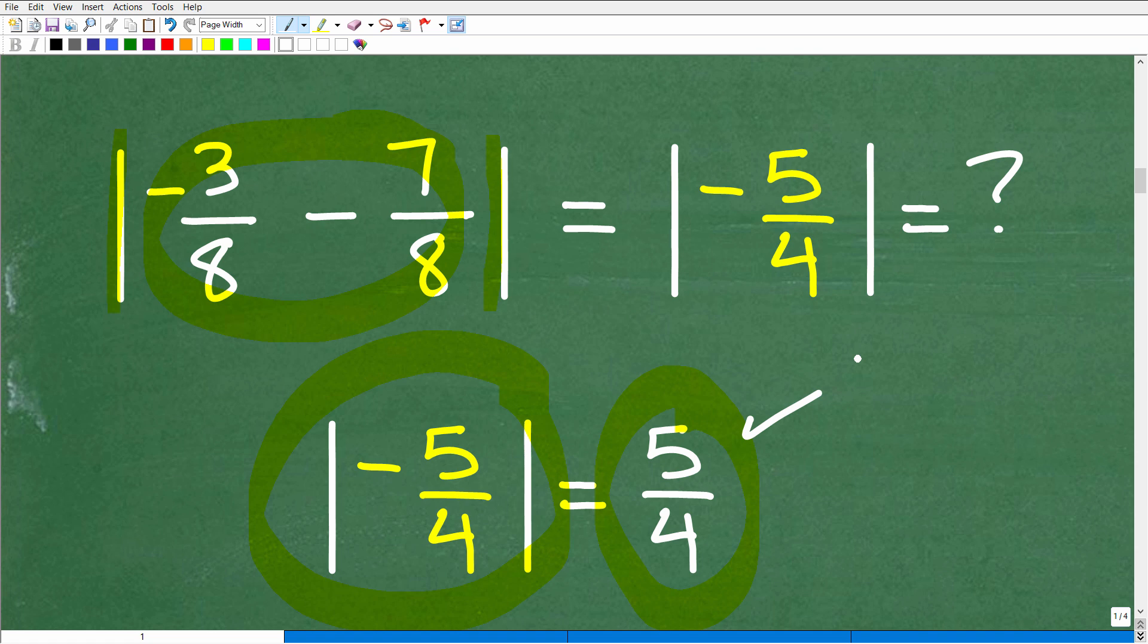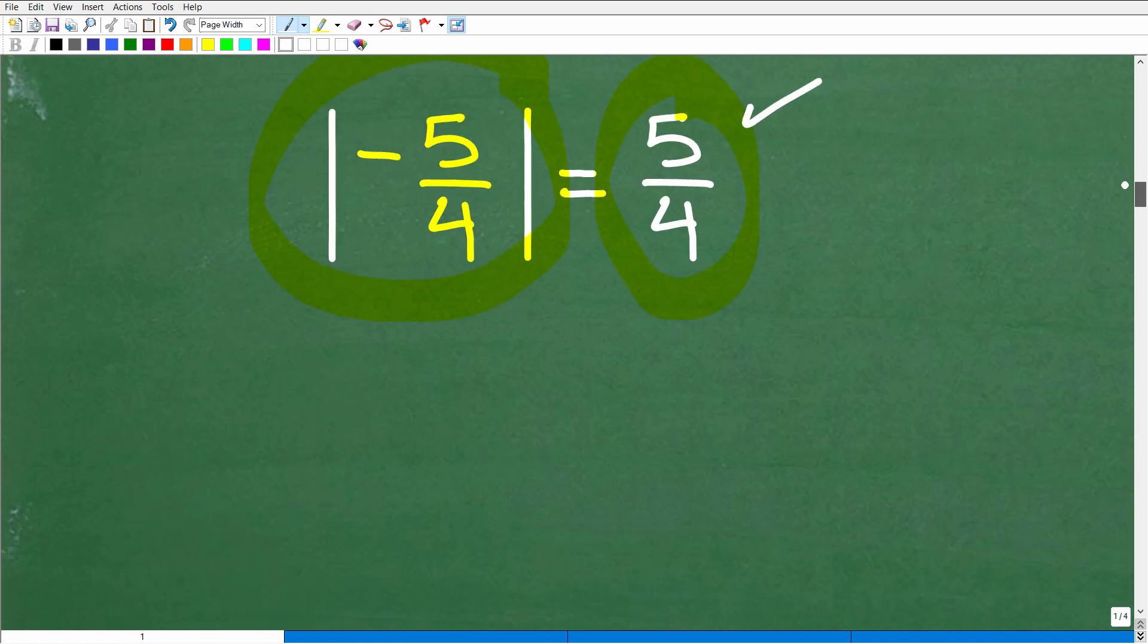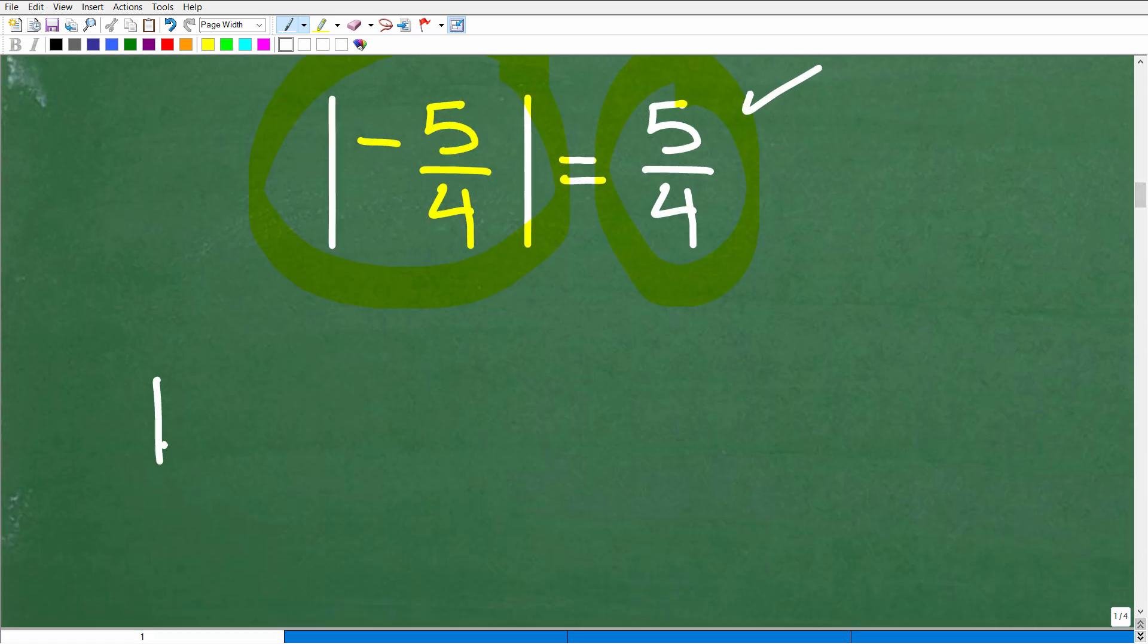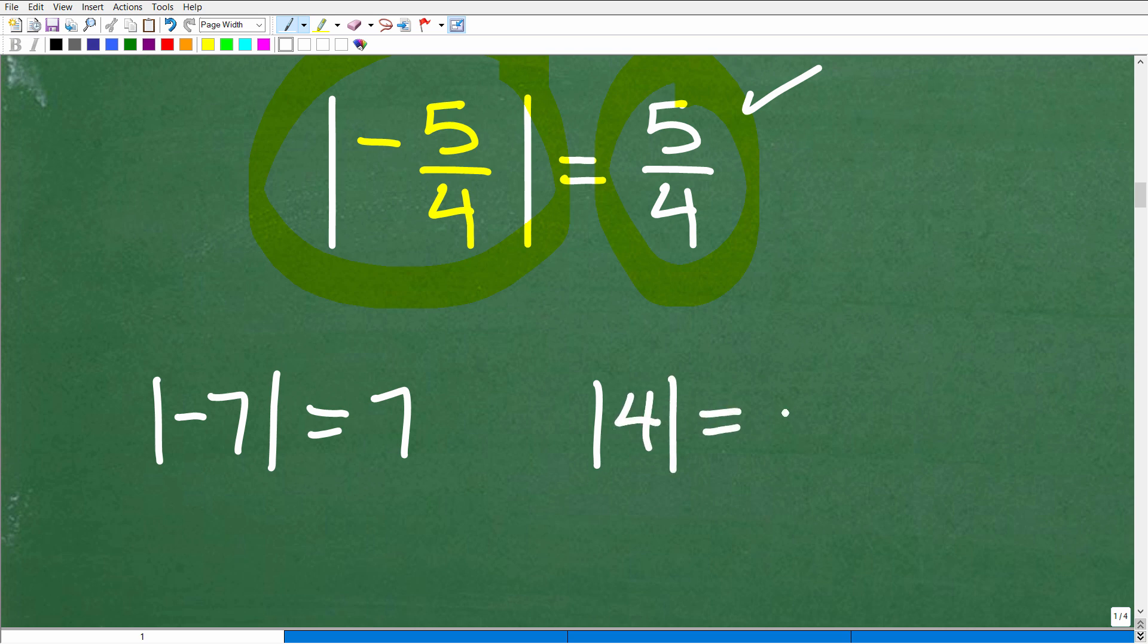Now, here is where a lot of students get confused. They think, okay, if you give me the absolute value of negative 7, oh, that's going to be positive 7, right? Or the absolute value of 4, positive 4, that is going to be 4. So most students can get these problems correct, but they have a false understanding of what absolute value means.